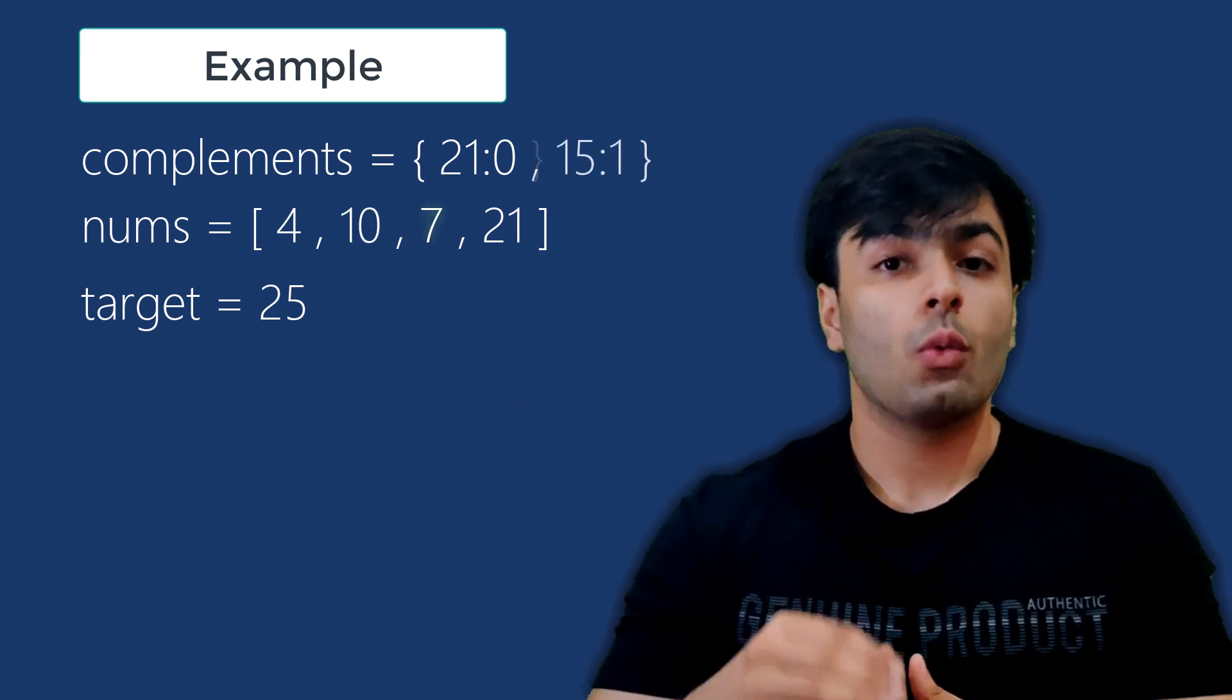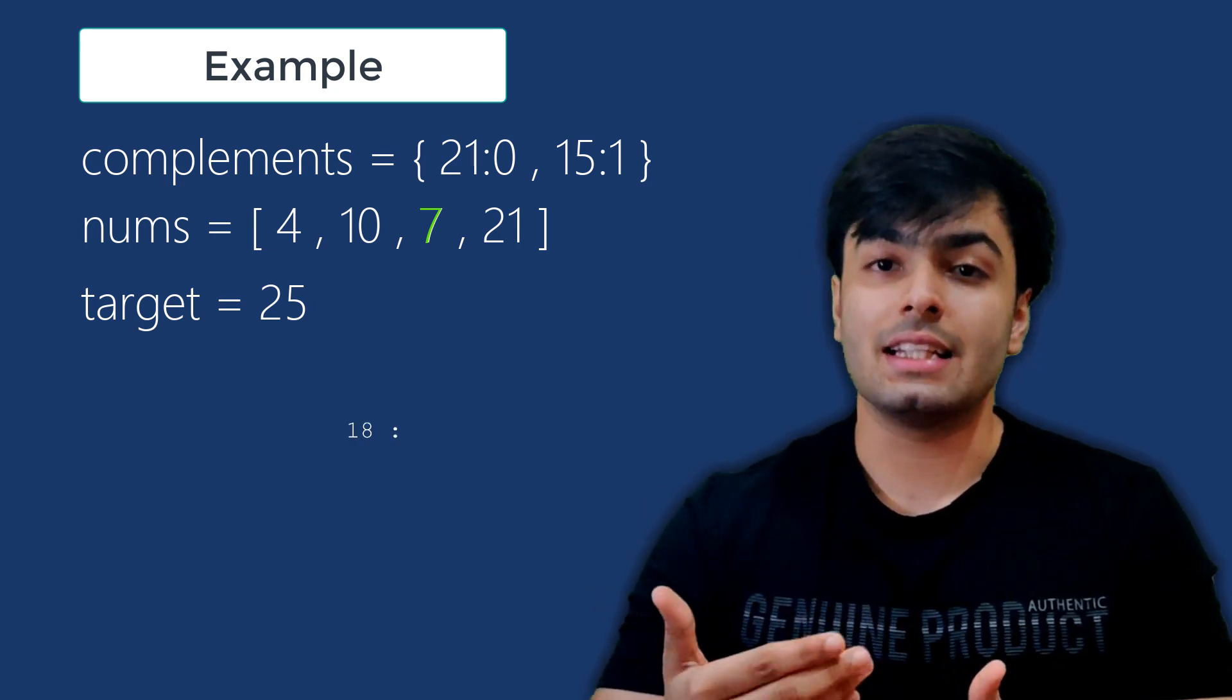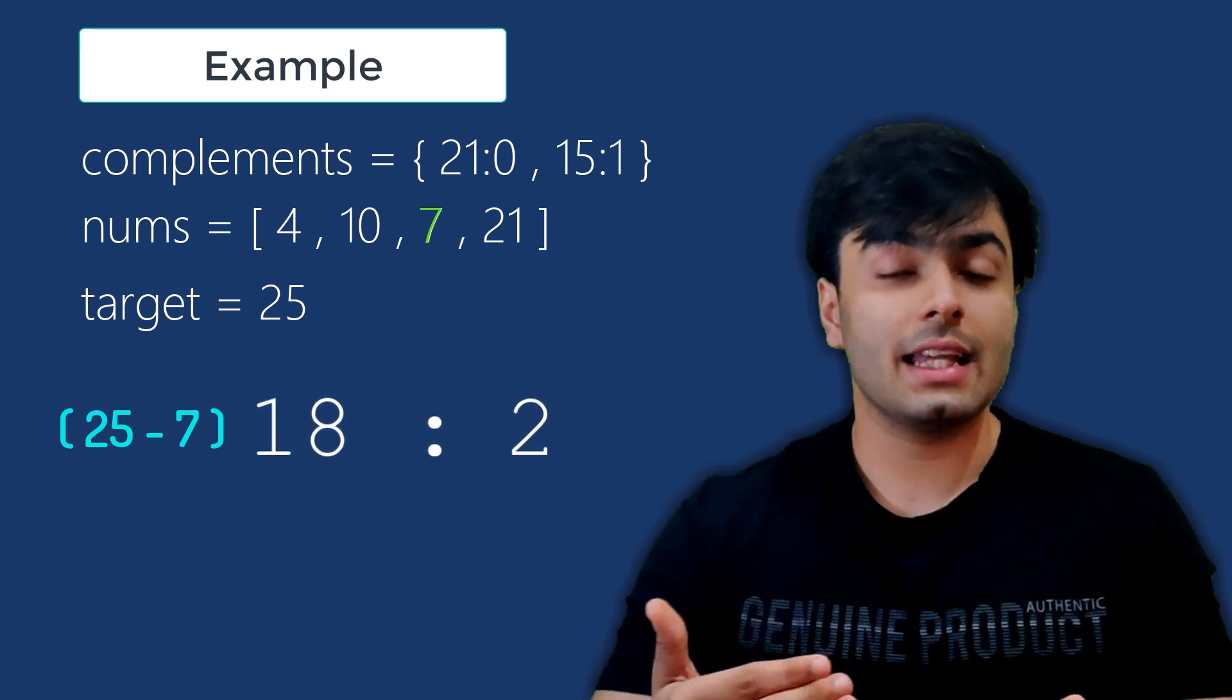Next, we move on to 7, which again is not a key in the dictionary, so we can create a new element with the key set to 18, which is 7's complement, and the value to 2, which is 7's index number.